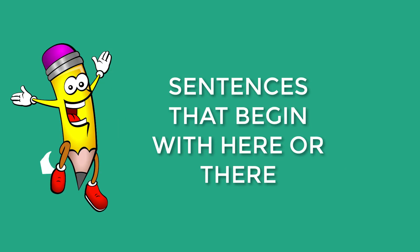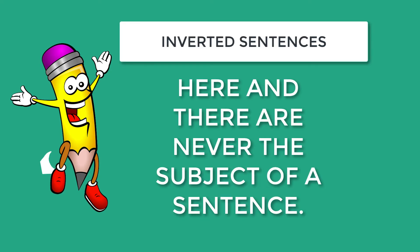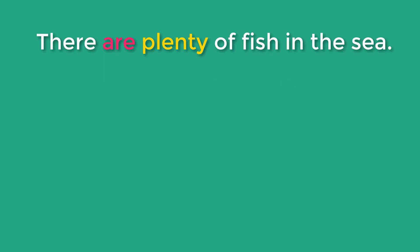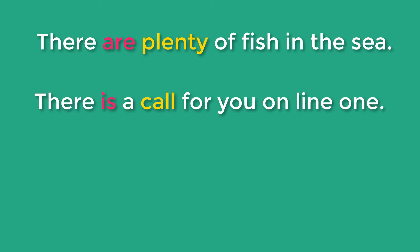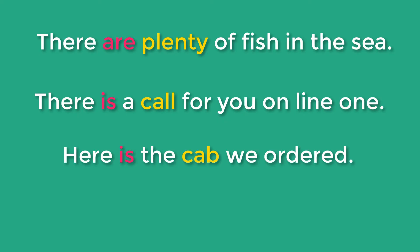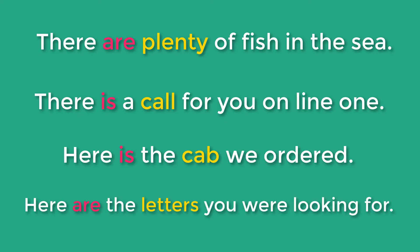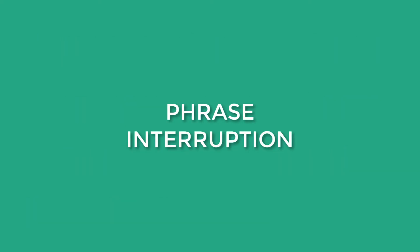Let's go on to sentences that begin with here and there. These types of sentences are said to be inverted, so here and there are never the subject. There are plenty of fish in the sea. There is a call for you on line one. Here is the cab we ordered. Here are the letters you were looking for. In all of these examples, these sentences are inverted.